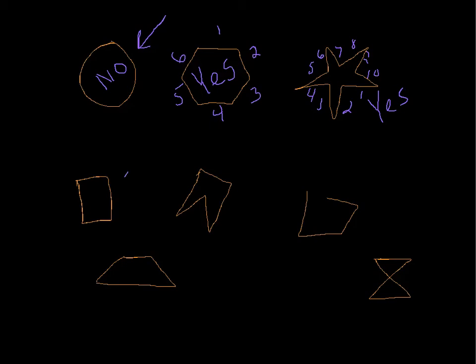The rectangle we already covered — yes, it is a polygon. Next, a pentagon with one, two, three, four, five sides. It doesn't have any curves or extra line segments, so this is a yes — it is a polygon. The next shape has an open area, and we know a polygon can never have any openings. So that would be a no, not a polygon.